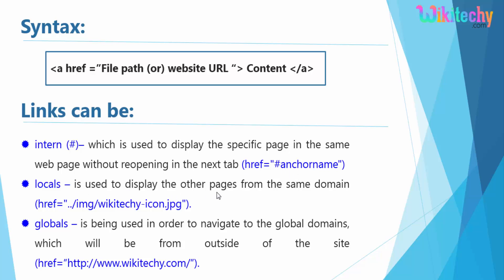Locals are used to display other pages from the same domain. You can see with href how the image is available in the same domain. Globals are nothing but redirecting to another website — they are used to navigate to global domains which are outside the current website.